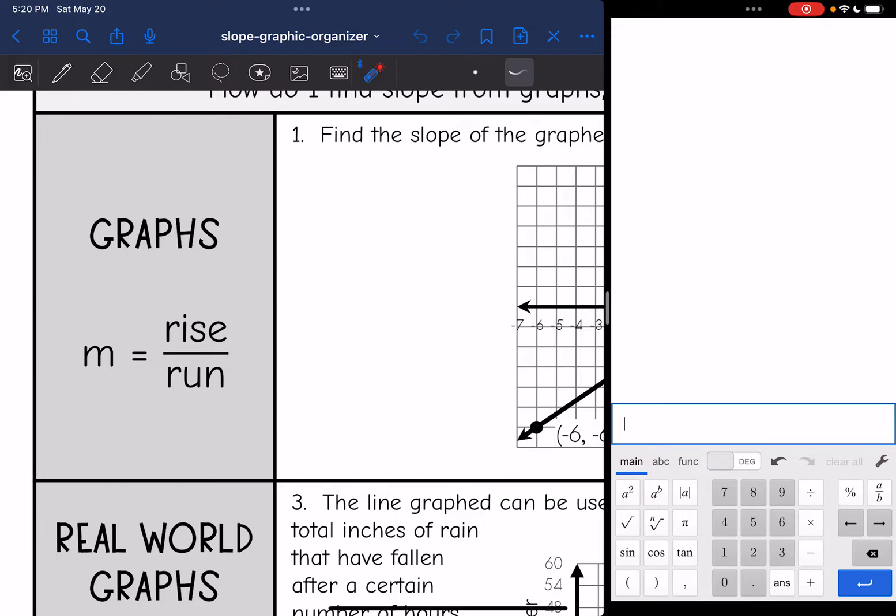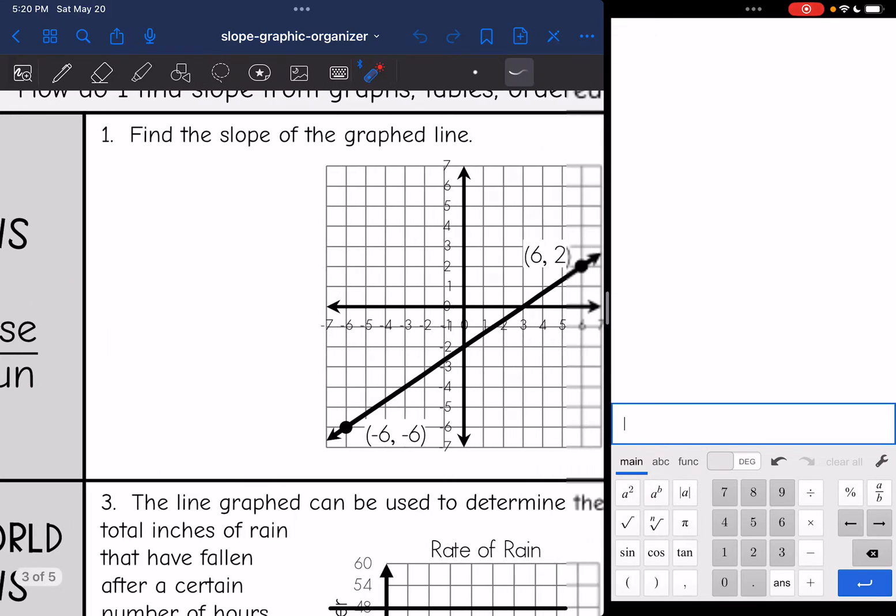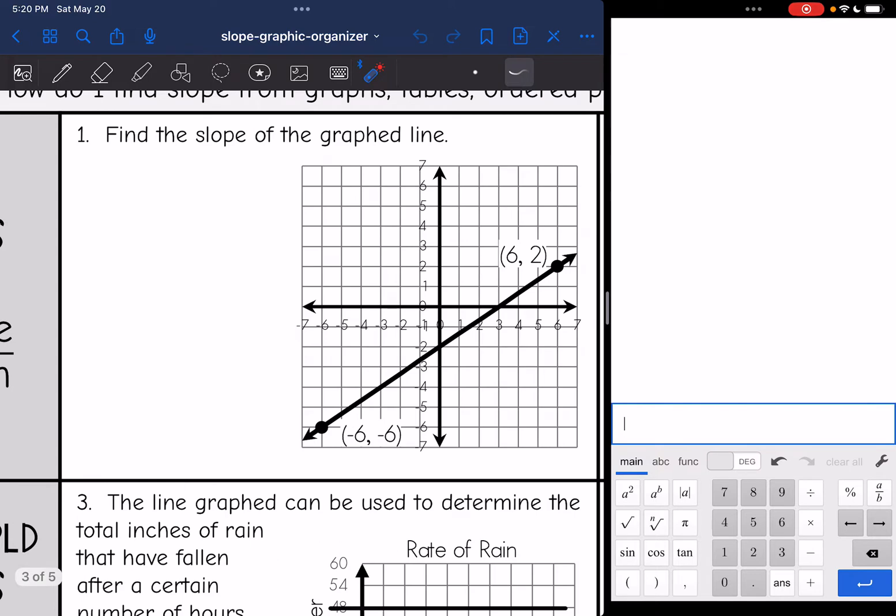To find slope from a graph, you just are going to do rise over run between two perfect points. So this one says find the slope of the graphed line. They gave us two points here, but they are really far apart. So I'm going to see if I can find any perfect points closer together. If you wanted to do slope formula with these two points, you could. But I think it's easier to do rise over run whenever you can make a small right triangle.